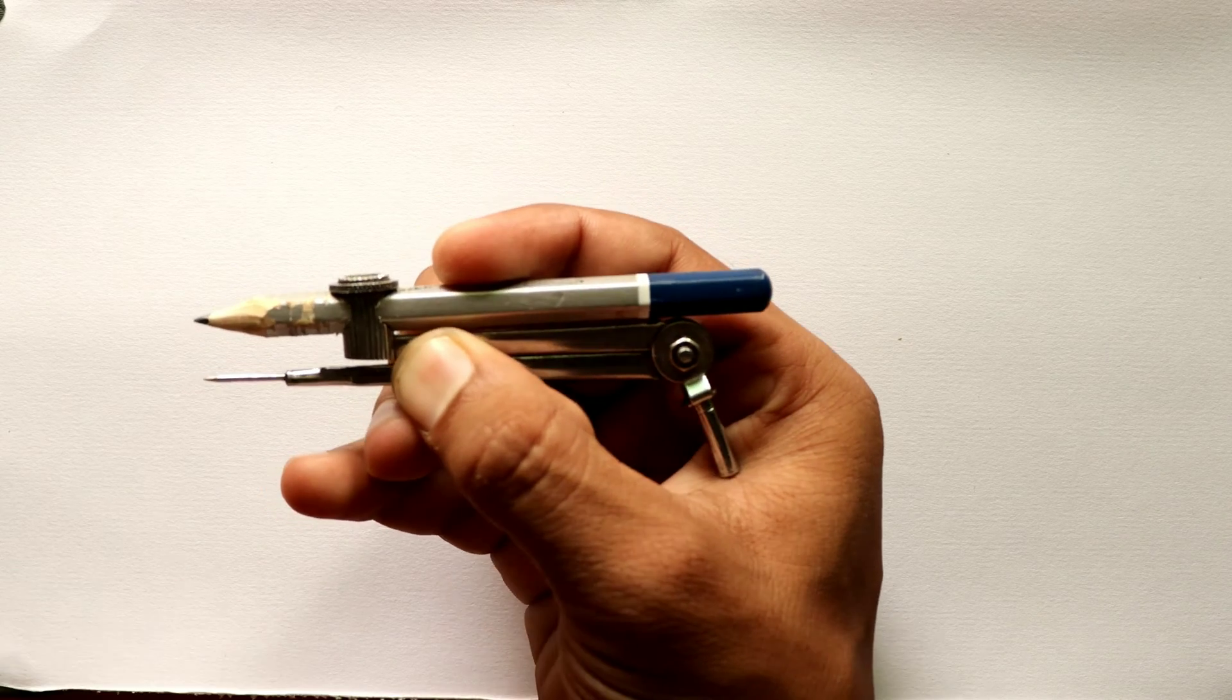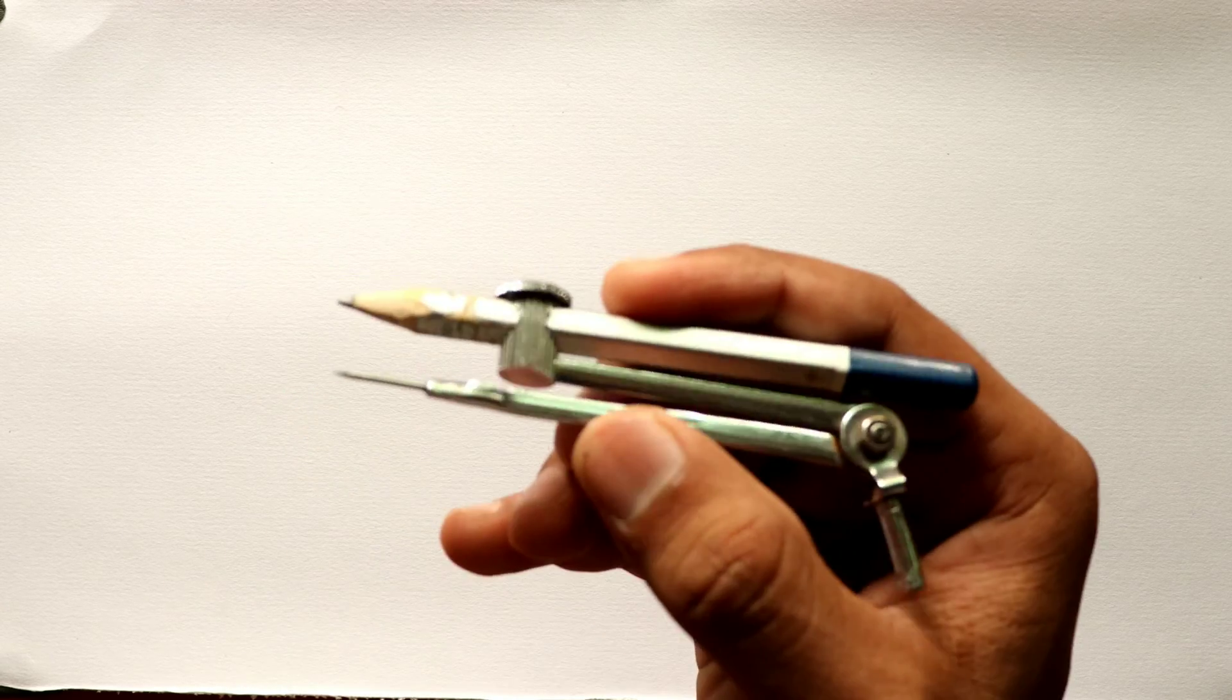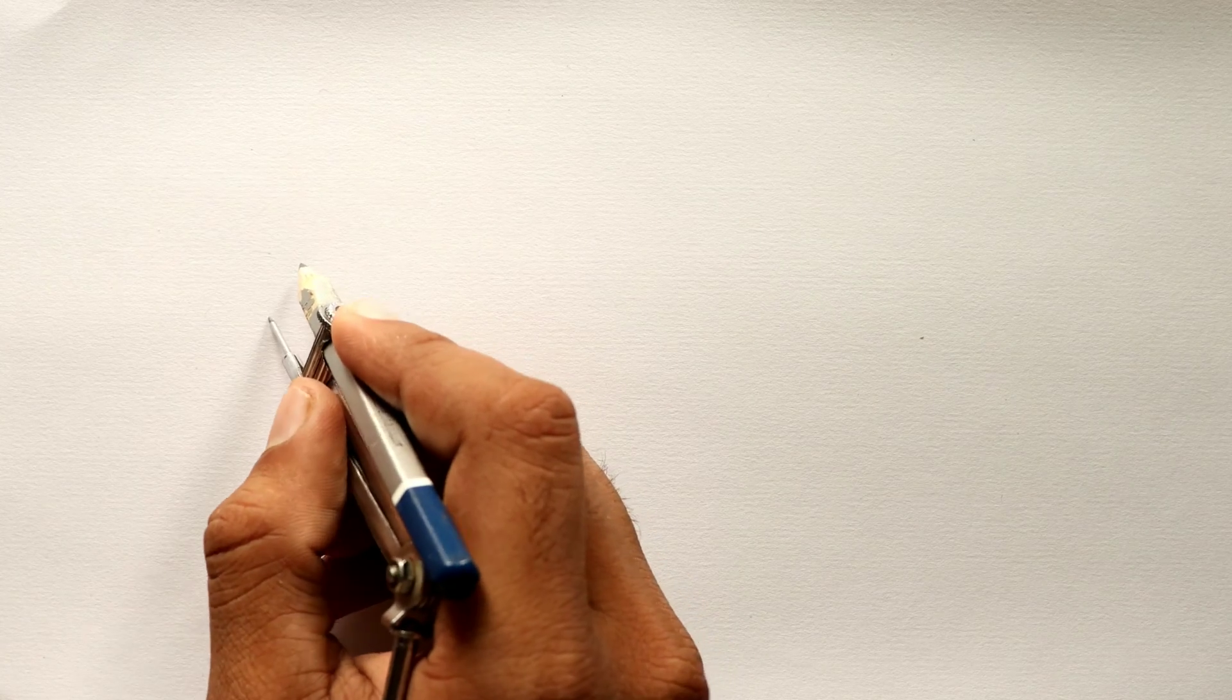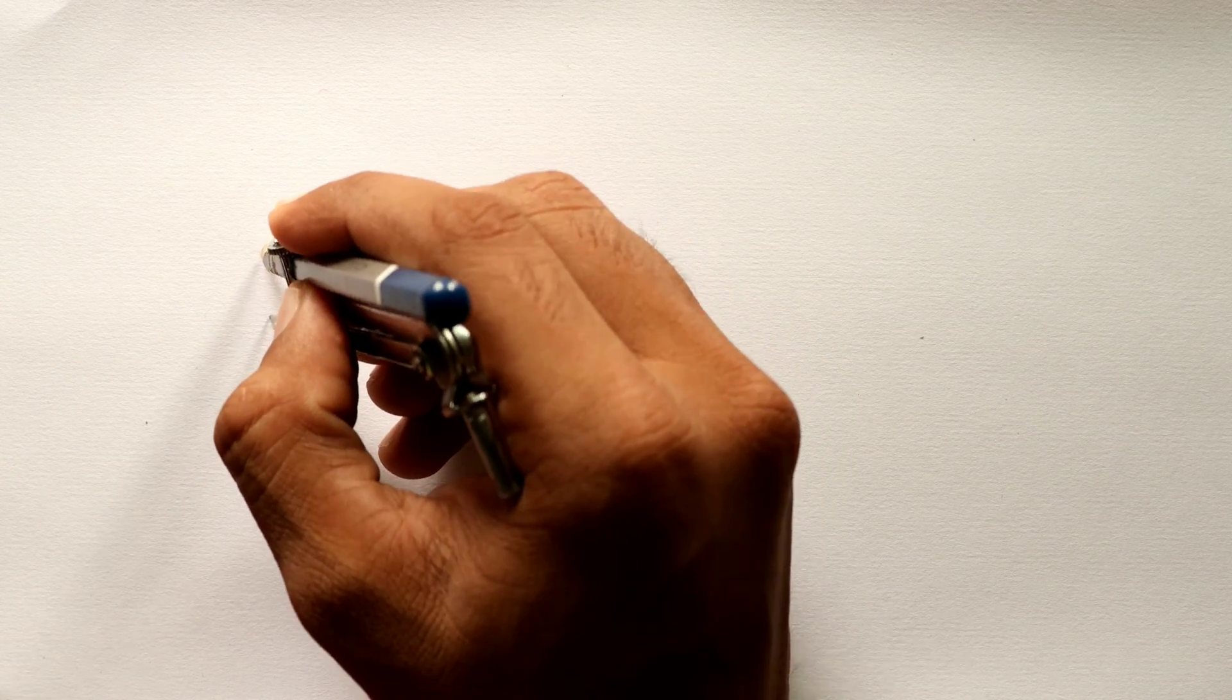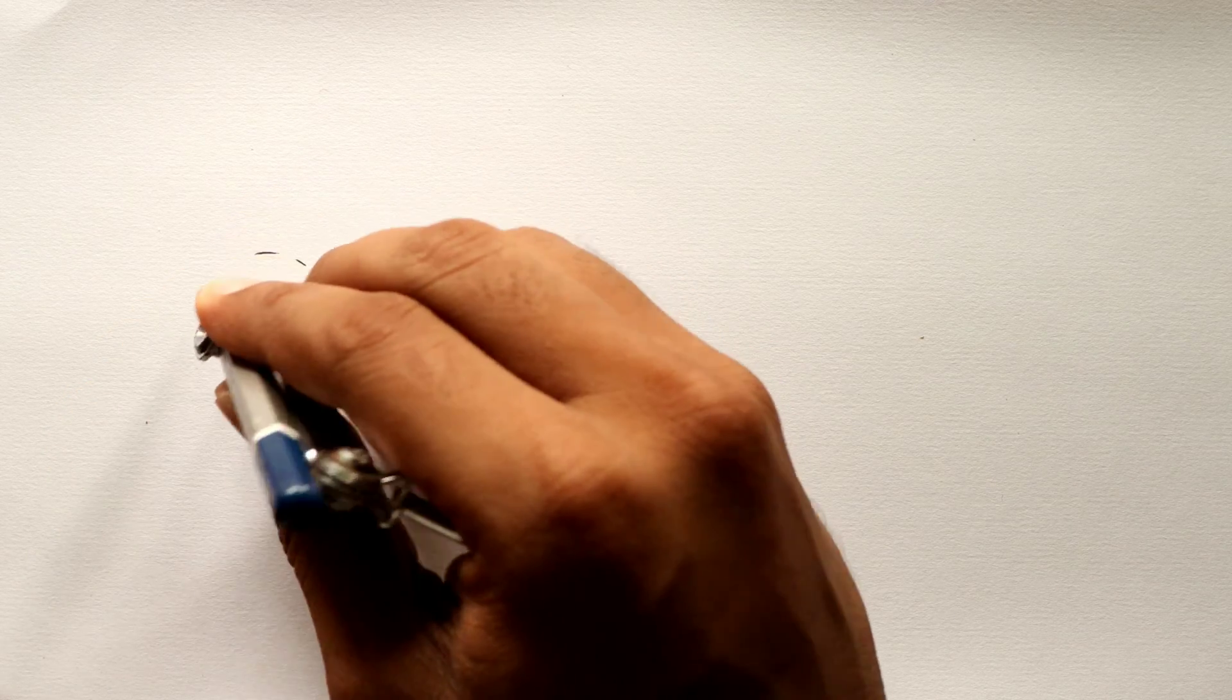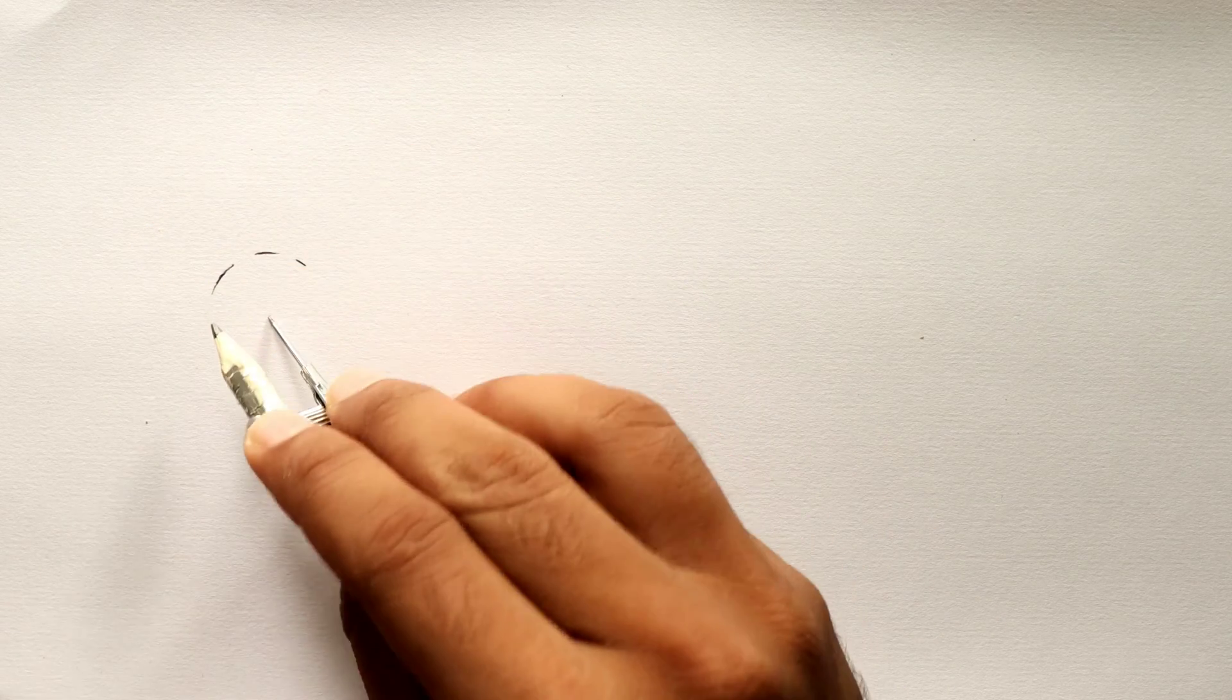First of all, we will use here a compass and a pencil. You can see how much distance I have taken, I have increased it a little bit. Then we will draw some arc here, you can see it clearly. Follow me along and I hope you will enjoy this tutorial very easily.